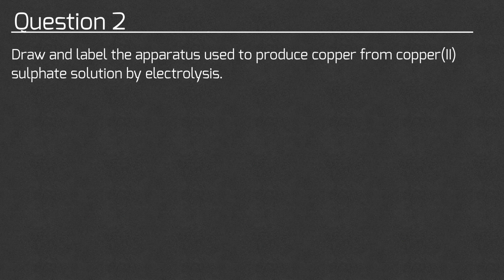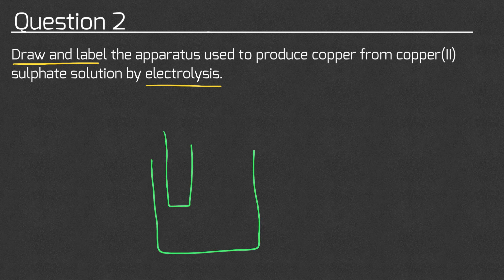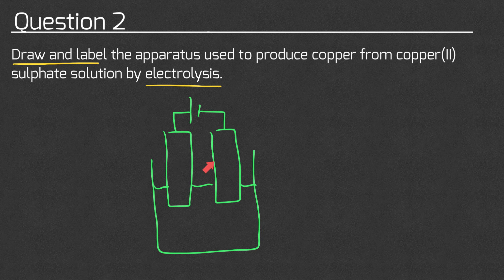Question two asks us to draw and label the apparatus used to produce copper from copper-2-sulfate solution by electrolysis. We need to do some kind of drawing and make sure we add labels for an electrolysis setup. You can draw a very simple sketch — it doesn't need to be a work of art. Here we've got two electrodes connected to some kind of power supply in some kind of electrolyte.